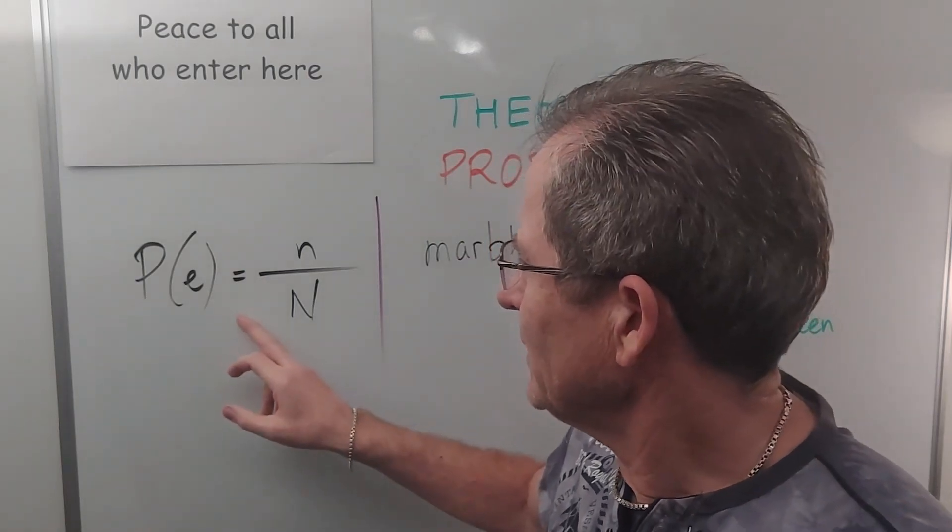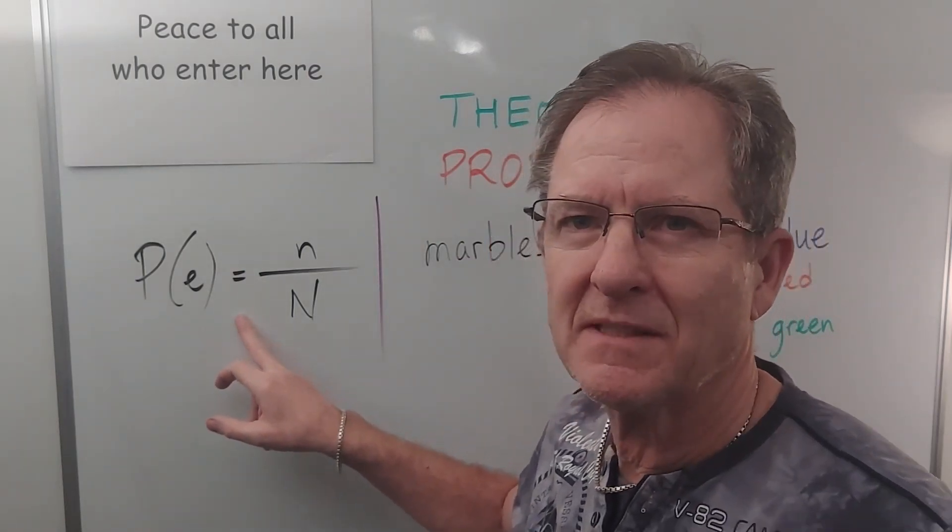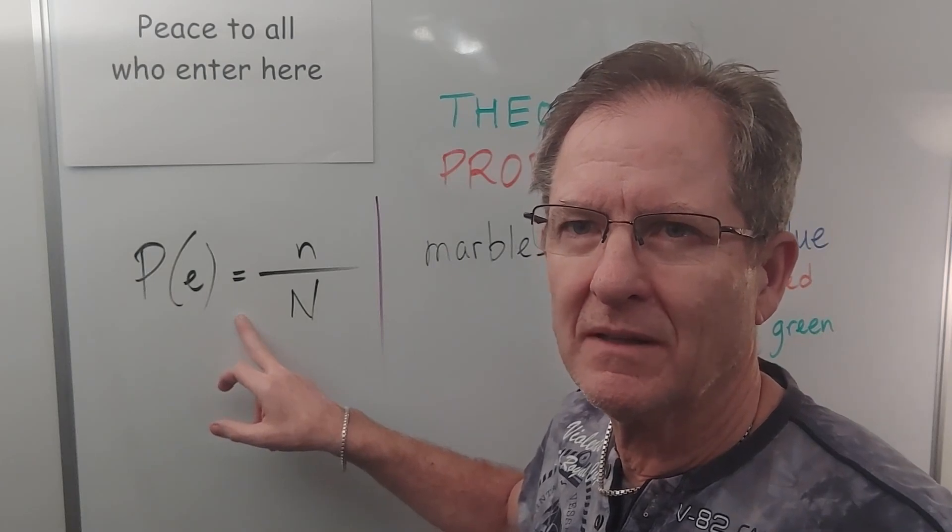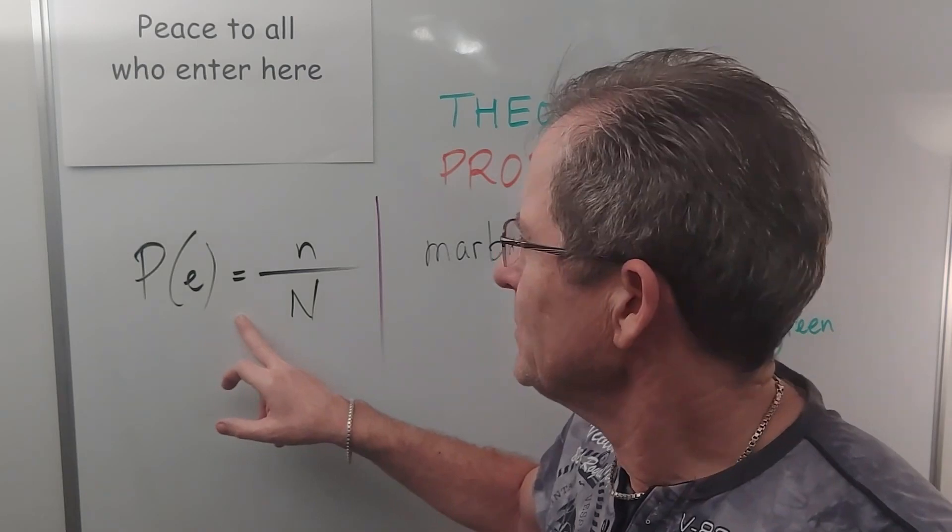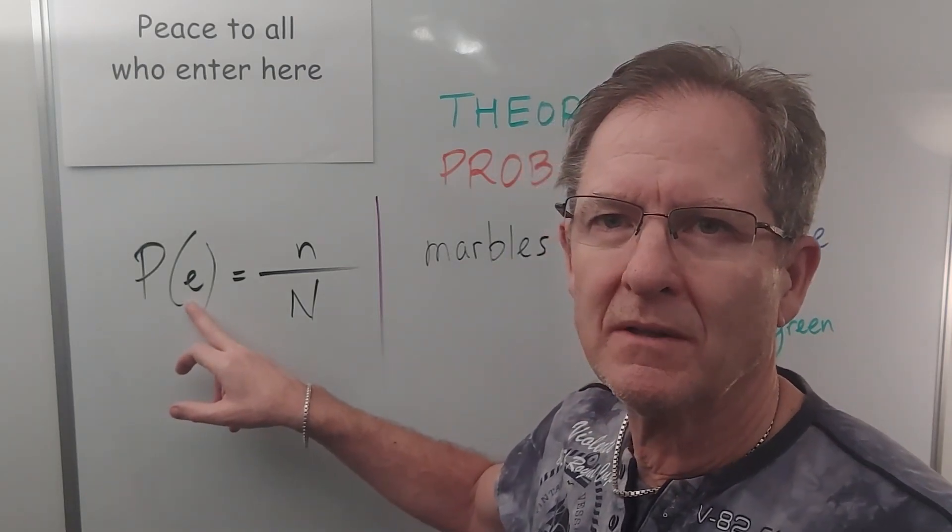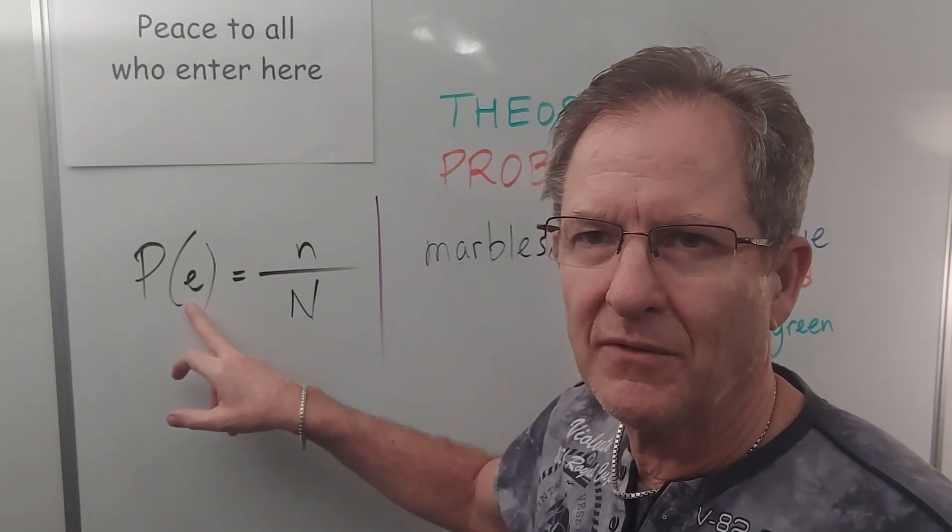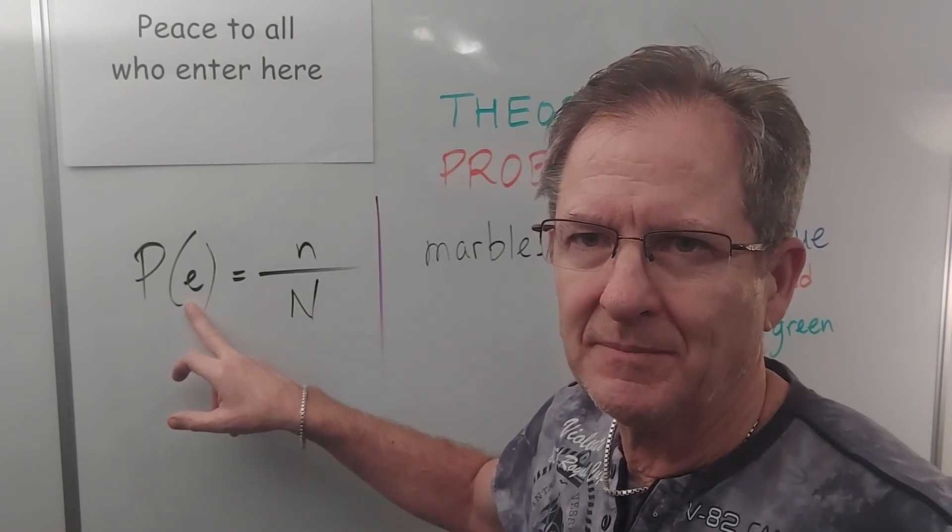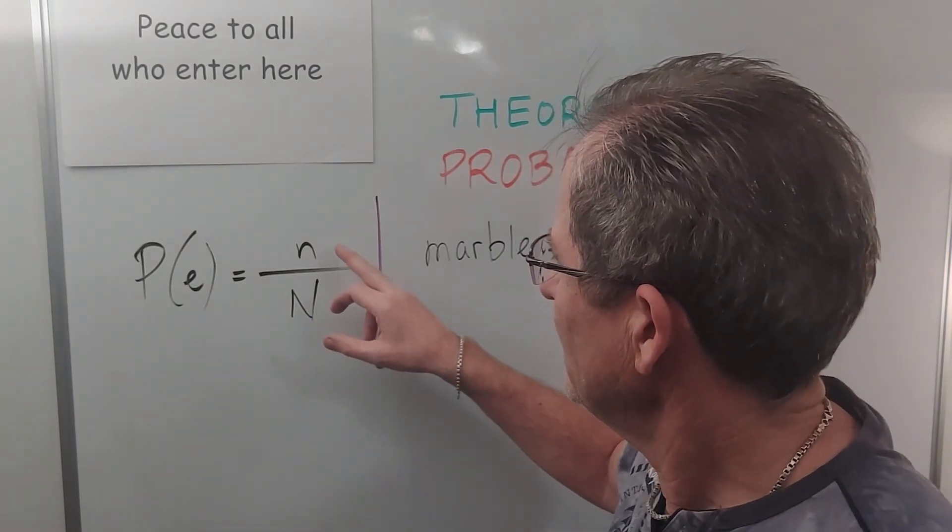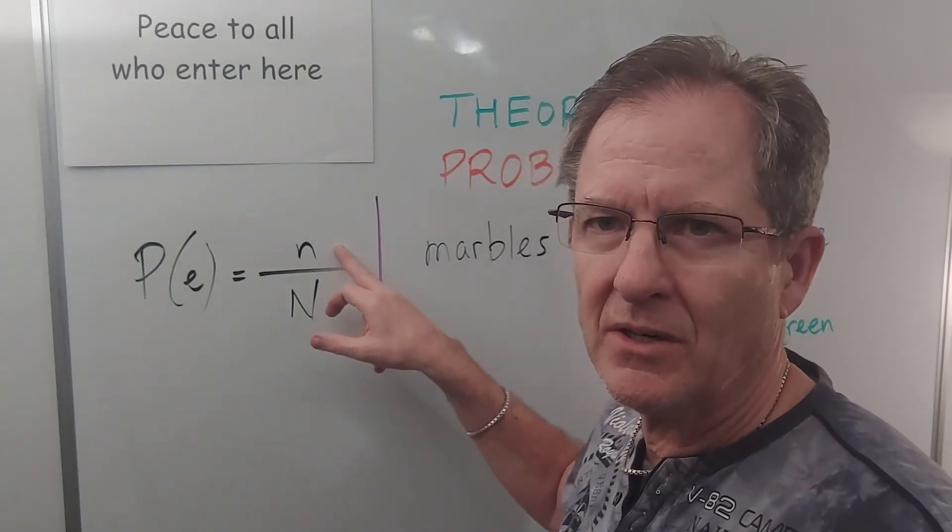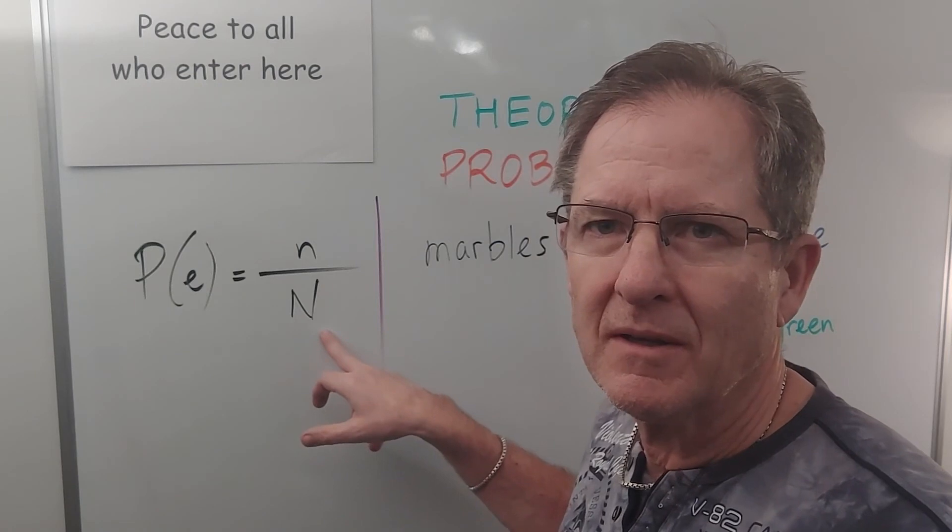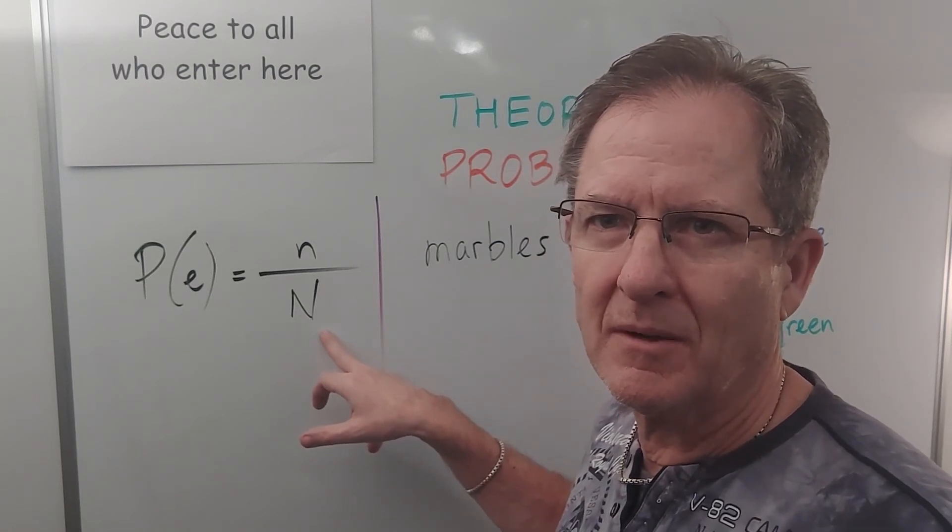Now the formula for experimental probability is pretty much the same as theoretical probability with the meaning being slightly different. We need to assume by the way that all events are equally probable for this to occur, otherwise you have to do some kind of weighted probability. So it's the number of times that the event in question occurs divided by the total number of possible outcomes.